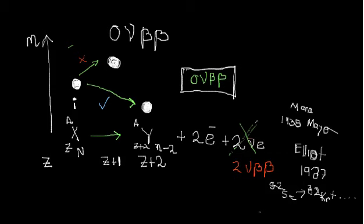And recently we were interested to know if is possible the process of the double beta decay without emission of neutrinos. This process was proposed by Wolfgang Furry in 1939.